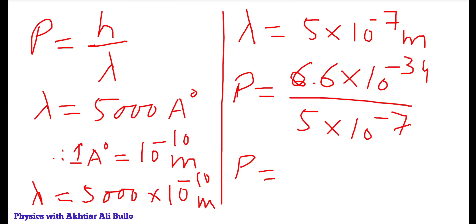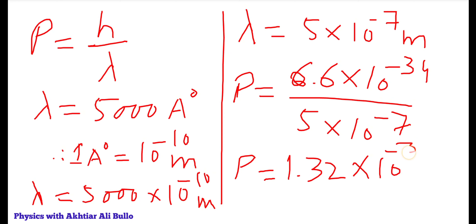When we divide 6.6 by 5 it gives 1.32. For the powers: 10⁻³⁴ divided by 10⁻⁷ — since the denominator has a minus power, it becomes plus in the numerator, giving 10^(−34+7).